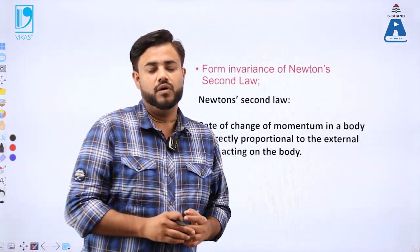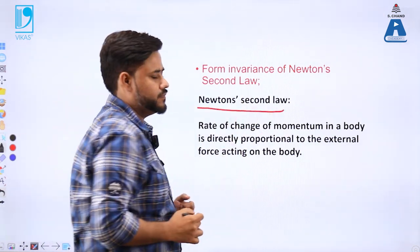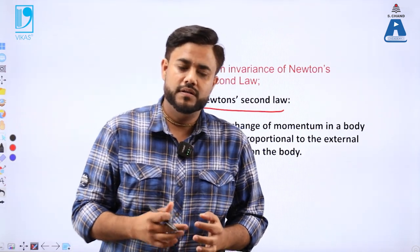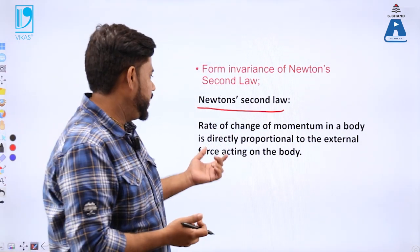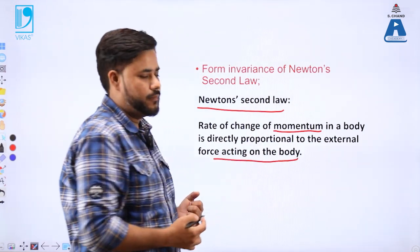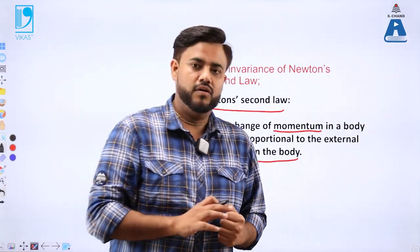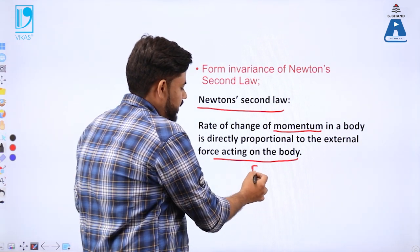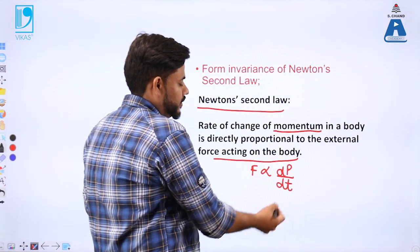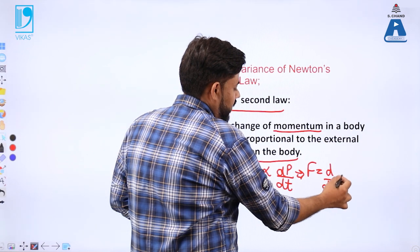Before coming to the form invariance topic, let us first understand Newton's second law of motion. The rate of change of momentum is directly proportional to the external force acting on the body. The relationship between force and momentum given by Newton's second law states that force is directly proportional to the rate of change of momentum, where momentum is the product of mass and velocity: F = d(mv)/dt.